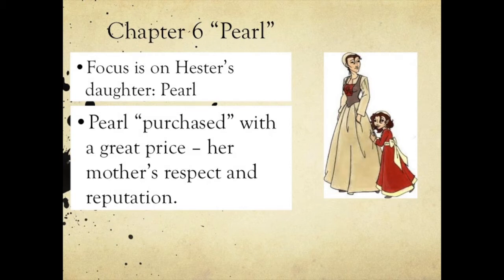You have to first look at her name and think about a pearl — how a pearl is created. They form inside the shell of a mollusk, started as an irritant like a piece of sand. Then layers of calcium build around that, creating this precious material, this pearl, that's very valuable. But it begins from an irritant, some problem.